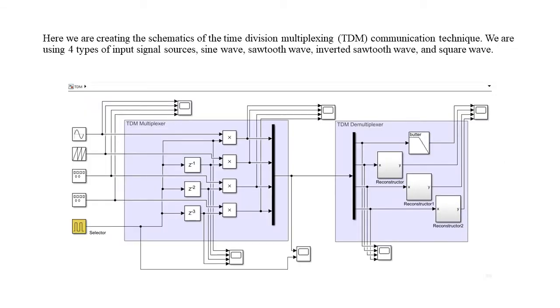In this diagram, we created the schematic of the time division multiplexing communication technique. There are four input signal sources: the sine wave, sawtooth wave, inverted sawtooth wave, and square wave.